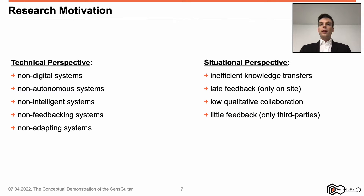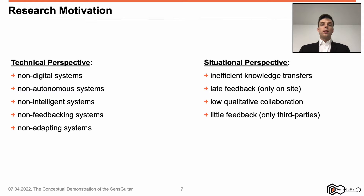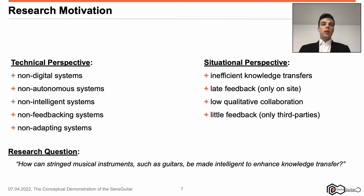Further, we detailed the situational perspective on guitars. These realize inefficient knowledge transfers — only late feedback is enabled by them, and this feedback is only provided by third parties. Thus, low-quality collaboration results can be expected. If you are interested in further explanations, please have a look at the last session. However, the research question was: how can stringed musical instruments, such as guitars, be made intelligent to enhance knowledge transfer?